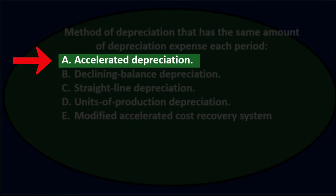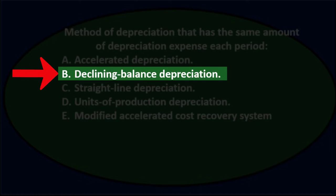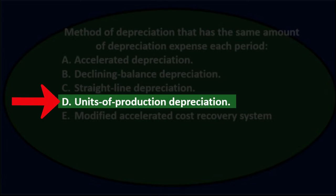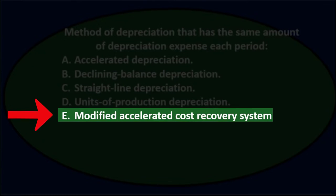A. Accelerated depreciation. B. Declining balance depreciation. C. Straight line depreciation. D. Units of production depreciation. And E. Modified accelerated cost recovery system.